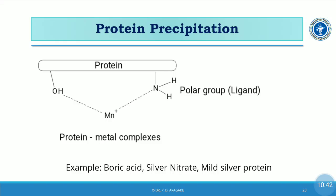In the diagrammatic representation, protein containing polar groups such as amino groups or hydroxyl groups forms a complex with metal cations (positively charged ions). Examples include boric acid, silver nitrate, or mild silver protein. Many soap solutions or hand washes contain silver — that silver is useful to inhibit the growth of or kill microorganisms by the protein precipitation mechanism. So we have seen oxidation, halogenation, and protein precipitation as mechanisms of antimicrobial agents.